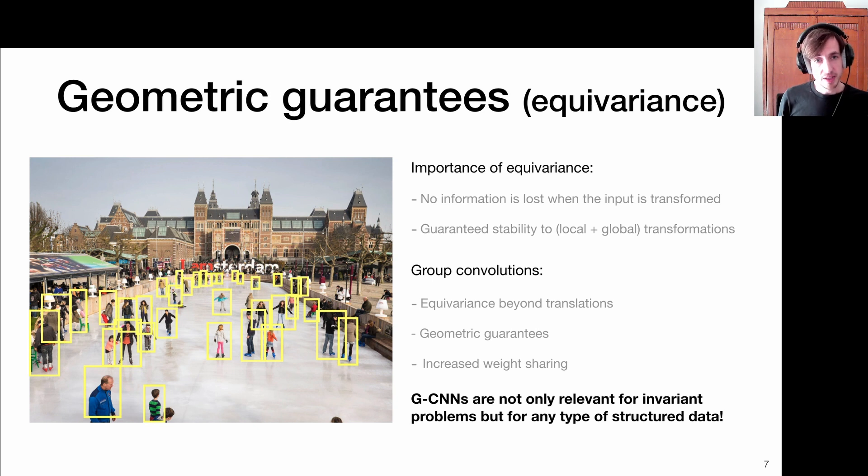Now, an important statement: this notion of equivariance and invariance is not just important for problems that require invariant solutions, but basically for any type of structured data, because equivariance actually preserves the structure of the data. Consider this computer vision task of people detection. This is not an invariant problem because we expect these people to be skating in upright position and we have this fixed horizon and the gravity is pulling everything in some preferred orientation. So we are not particularly interested in detecting these skaters if I rotate it with 180 degrees. The problem itself is not invariant.